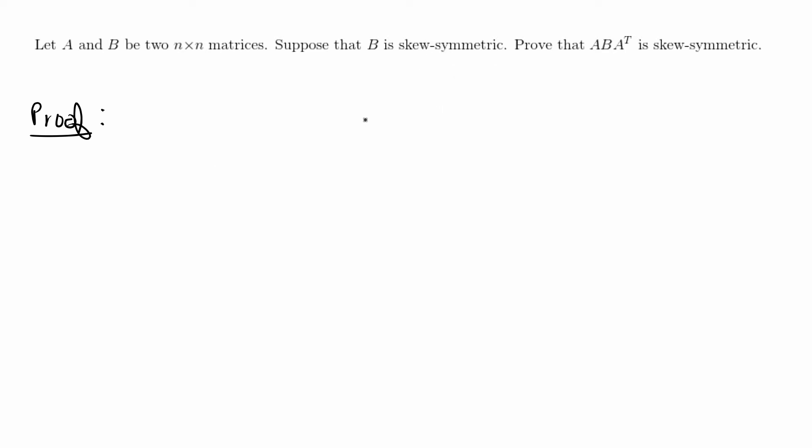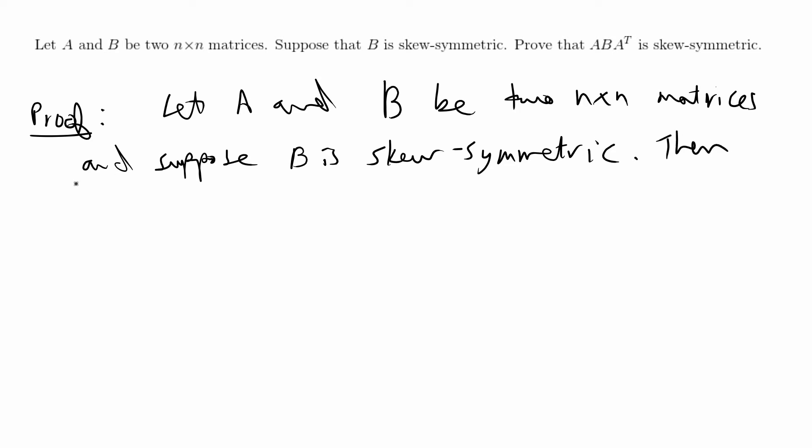Let me first define what skew-symmetric is in the proof and we're going to use that definition later on to prove that ABA^T is skew-symmetric. Let A and B be two n by n matrices and suppose B is skew-symmetric. I'm just rewriting what we were given. Then by assumption we can say that B transpose is equal to negative B.